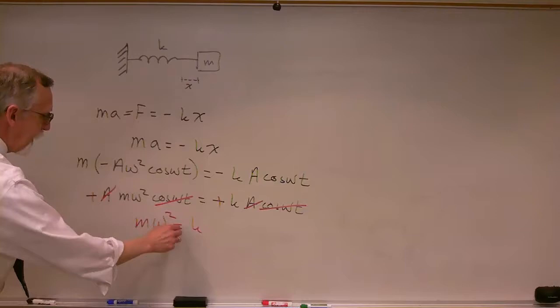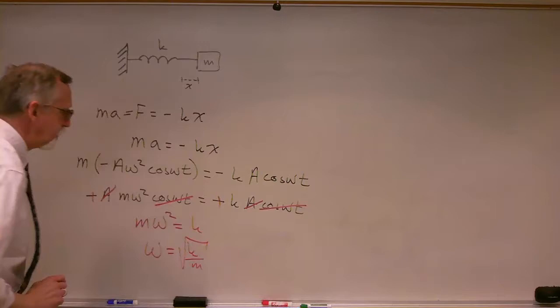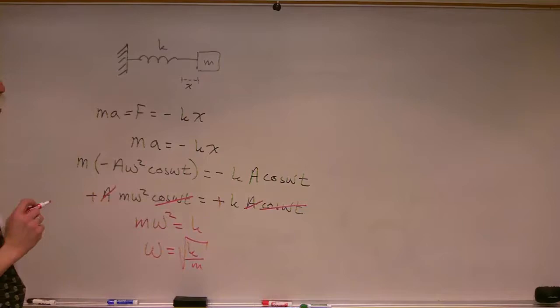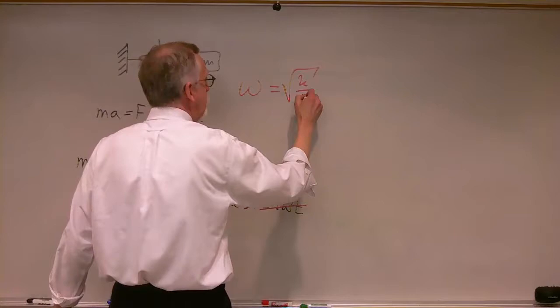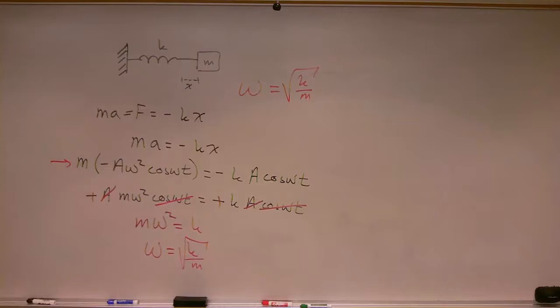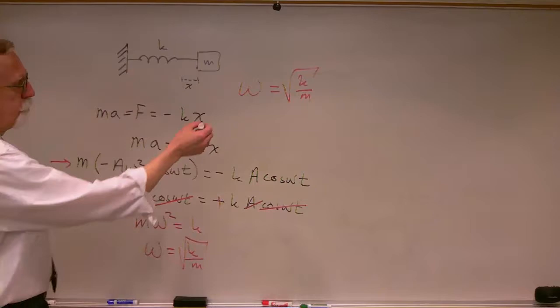Dividing by m and taking the square root, omega equals the square root of k over m. If we describe our simple harmonic motion with this angular velocity, with omega equal to the square root of k over m, then the results we derived for the uniform circular motion exactly describe the motion of a mass on a spring.